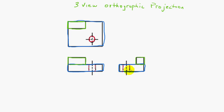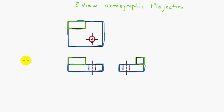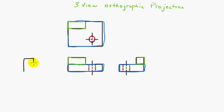For this object, these three views show us the complete representation on a 2D piece of paper. Now if we had reason to — which we don't because this object is fully described — but if we had reason to, we could draw, for example, a left-hand view. What would the left-hand view look like? It would look almost like the opposite of the right-hand view, and I say almost for a reason — I'll show you in a minute.